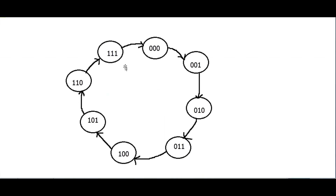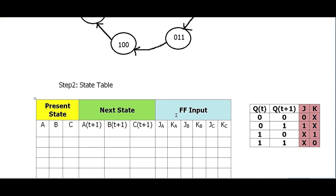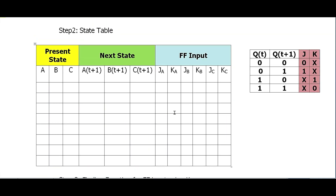We have to draw the state diagram like this. All the possible combinations 0 to 7 are written here. The next state for 0 is 1, then 2, 3, 4, 5, 6, 7, and then it goes back to 0. Once we draw this state diagram, we have to move to the state table, which contains three things: present state, next state, and flip-flop input.